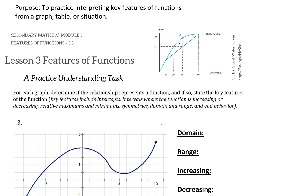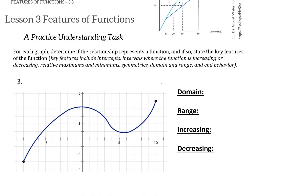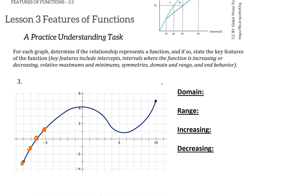For the graph section, the instructions are: for each graph, determine if the relationship represents a function, and if so, state the key features. Let's look at graph three. First of all, it is a function. To check from a graph, you may have heard of the vertical line test — for every X value, a vertical line should only hit the graph in one place for it to be a function.